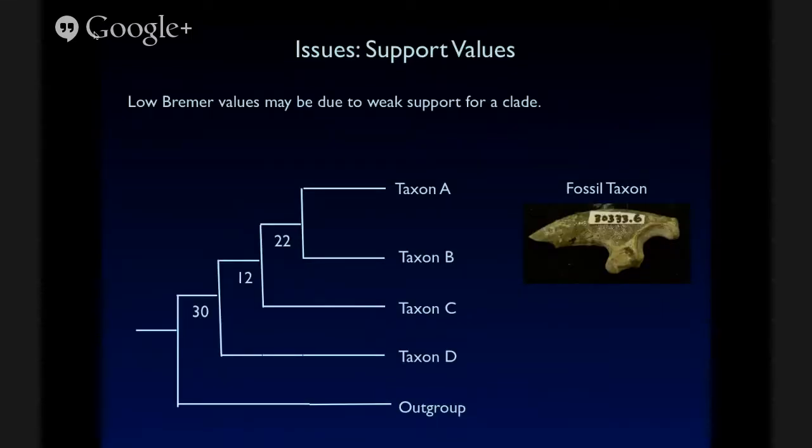There are some issues, though, and some of these will apply to any types of methods. Others are specific to parsimony. And one of them is that support values can really be affected negatively by the inclusion of fossil data. And I want to make a distinction. If we're including a fossil and the support value is low for that branch, that's just fine because we don't want to have false confidence in that branch. The problem is that these support values can decrease throughout the tree because of the inclusion of a particular fossil.